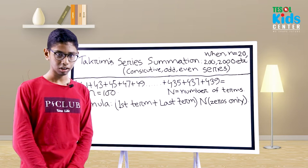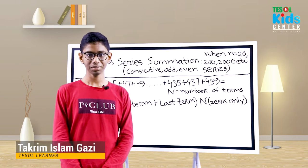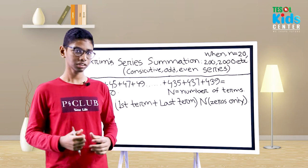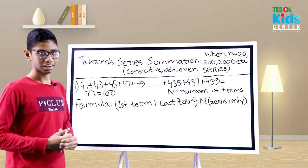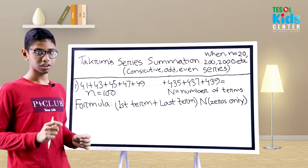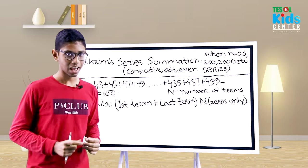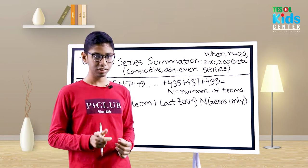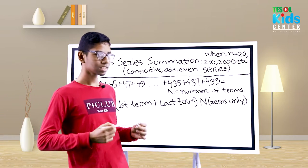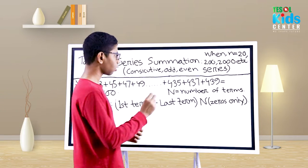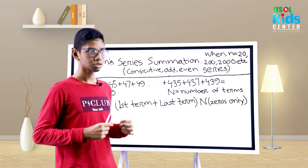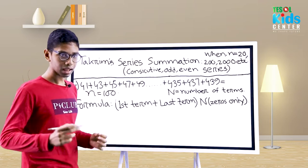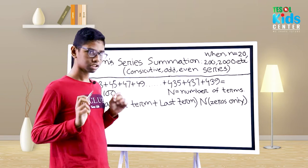Bismillahirrahmanirrahim. Assalamualaikum to everyone. This is Sakrim Islam Ghazi, from Ideal School and College. Today I'm going to share with you a new series summation trick. It's also for consecutive odd and even series, but there is a twist — in this case the formula is the same for both. It's applicable when n equals 20, 100, 1000, 20,000, etc., where n means the number of terms.